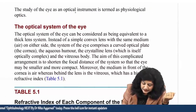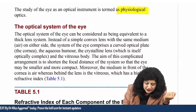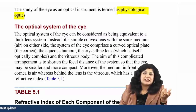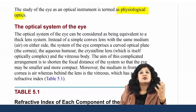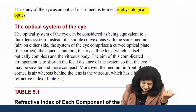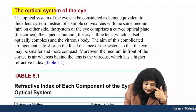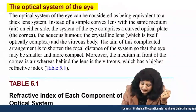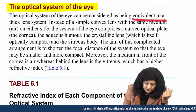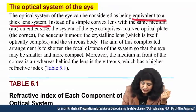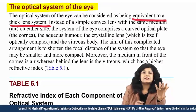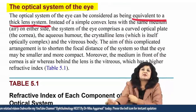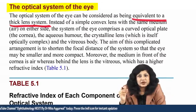The study of an eye as an optical instrument is called physiological optics — optics with regard to the physiology, that is the eye. Considering the optical system of the eye, it can be considered as equivalent to a thick lens system. That is why they have already explained optics with respect to lenses.